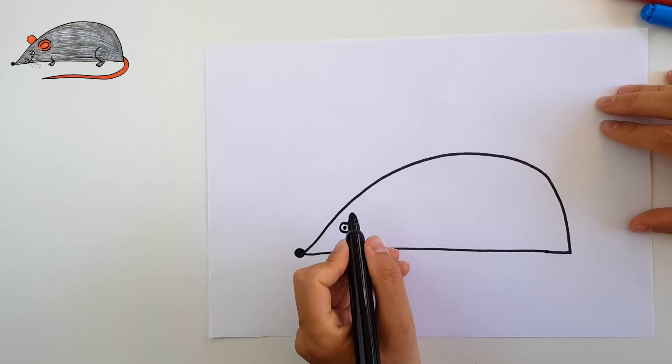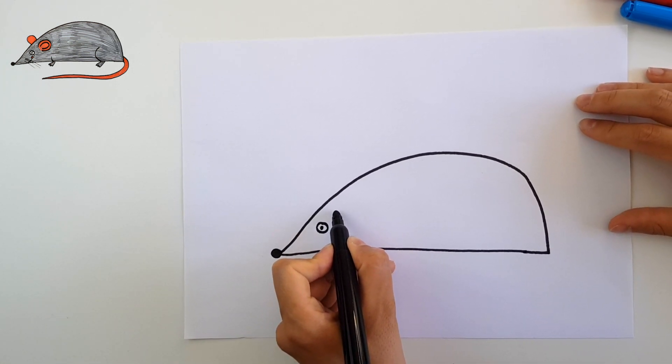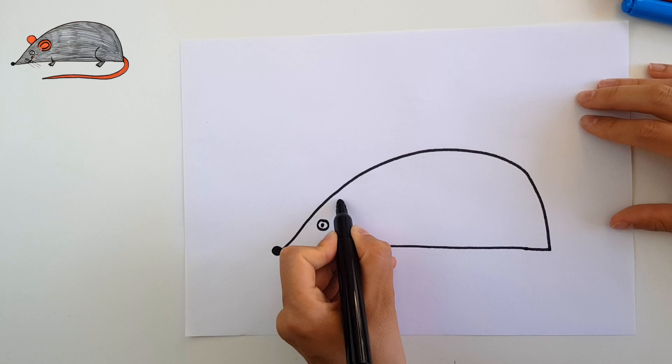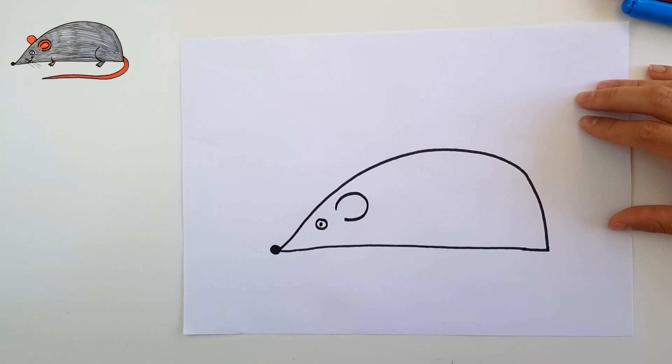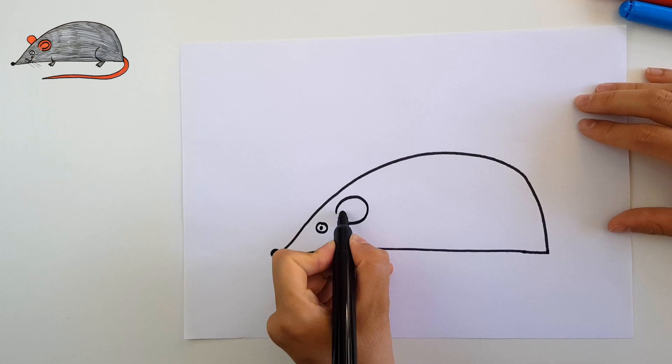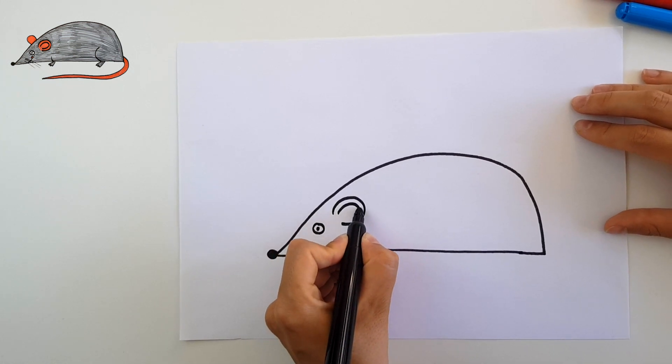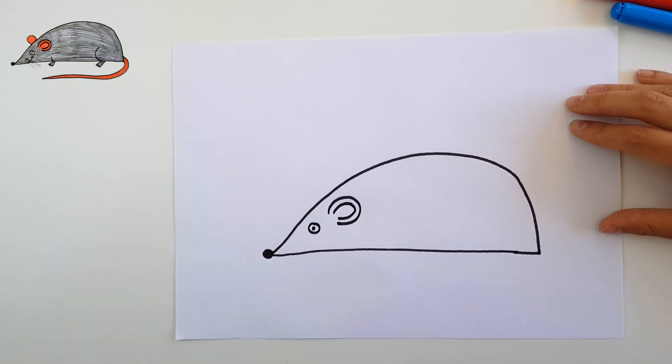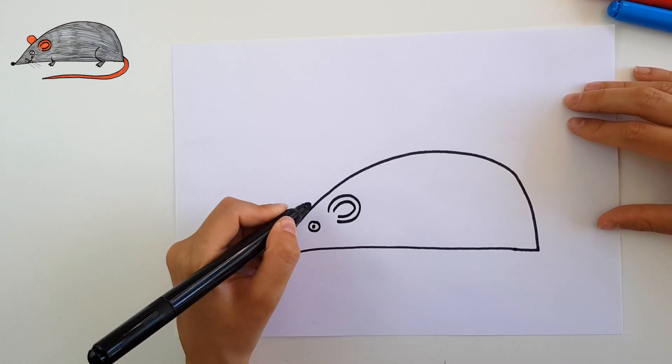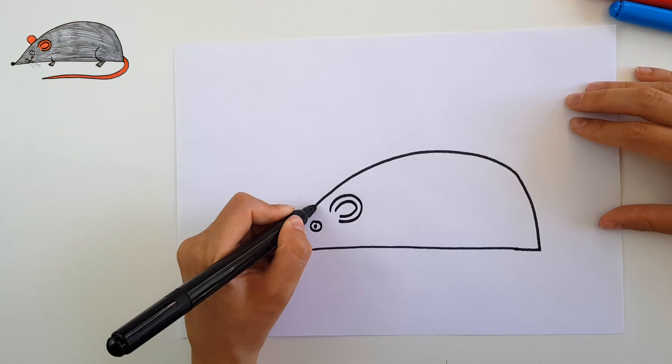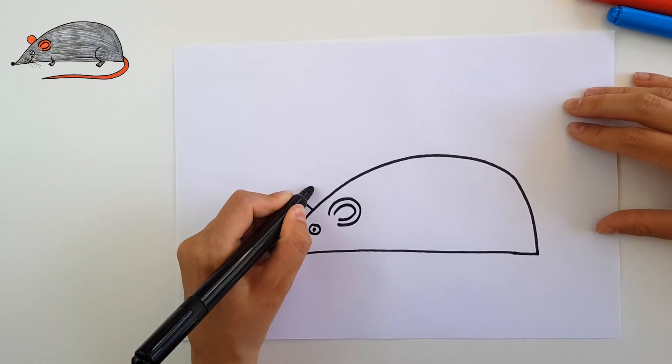Now let's continue with the ears. We will put one of the ears here and the inside part of the ear. The same way but a smoother shape. And now the other ear that is behind. I will draw it here.